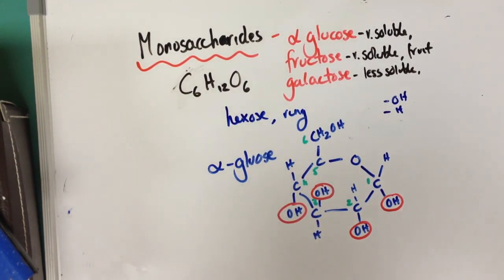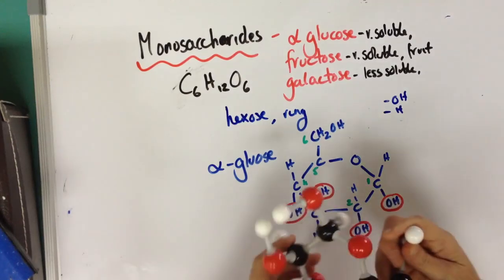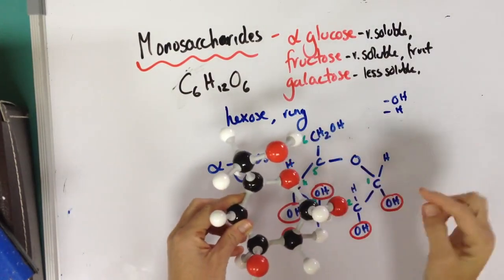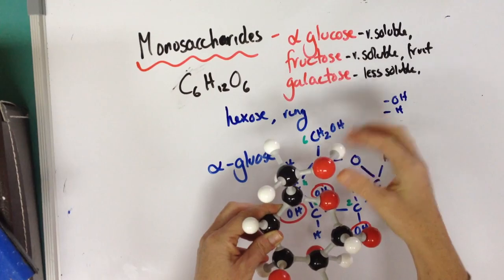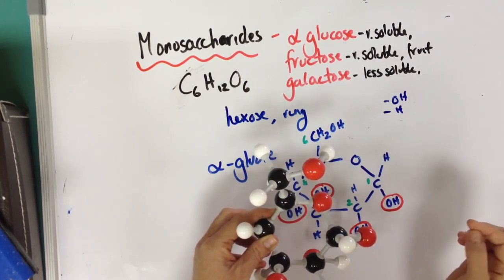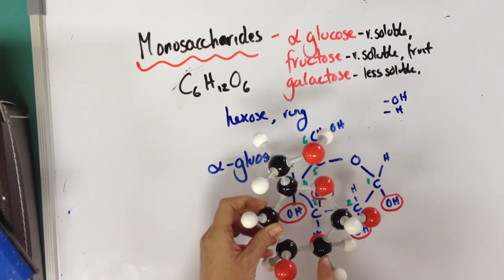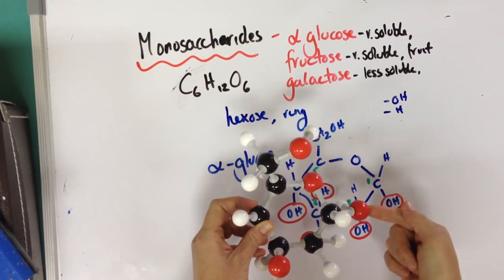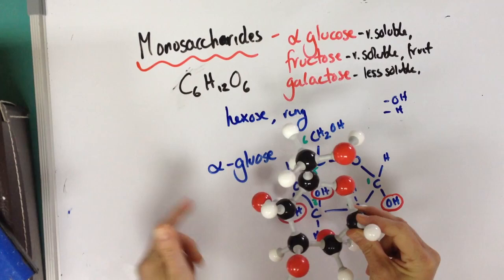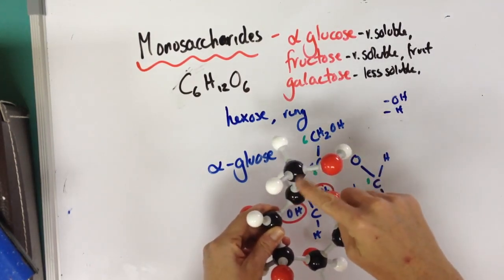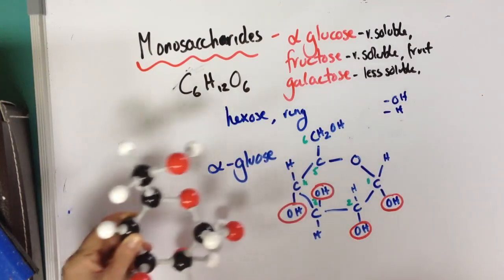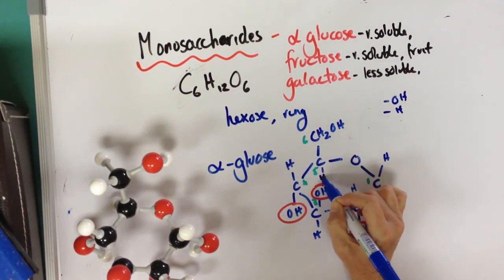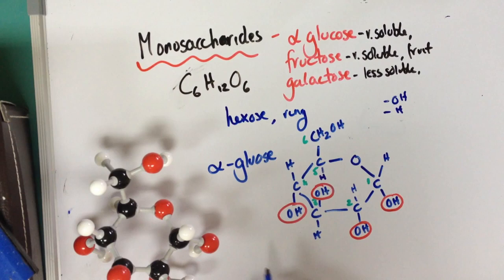If we take a look at an actual model of alpha glucose — red is our oxygen molecules, white is hydrogen, and black is carbon. This is carbon 1, 2, 3, 4, 5, 6. We've got the hydroxyl groups: down, down, up, down. And here we've got the CH2OH. What students often forget is that this carbon only has three bonds shown — there's actually a hydrogen atom there. So that's alpha glucose.